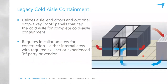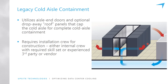With legacy cold aisle containment, the reason this generally isn't as efficient is that the rest of the room becomes hot. We're fully containing the cold air in the cold aisle, and when you open the door to a room with cold aisle containment done very well, it may be 90 or 100 degrees. A lot of people are not willing to work in that environment. While cold aisle containment is more popular because it's easier to deploy, it's often not done as well — meaning it's not fully optimized to its potential.